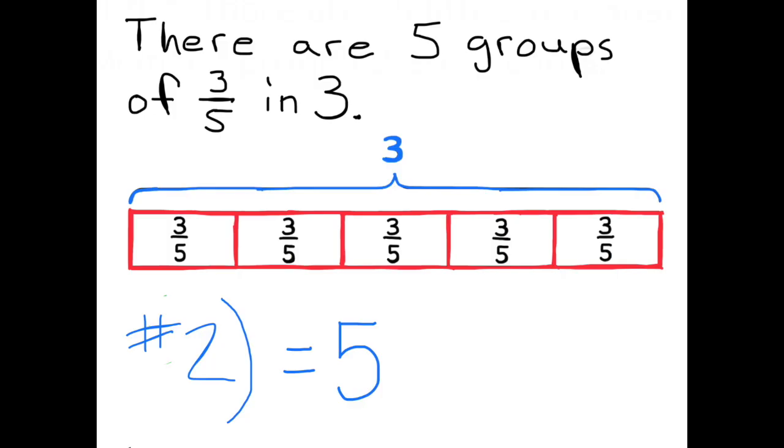Number 2. Describe how to draw a tape diagram to represent and answer 3 divided by 3/5 equals what number for a friend who was absent. In this tape diagram, I placed groups of 3/5 one after another until I had a total of 15/5, because 15/5 is equal to 3. There are 5 groups of 3/5 in 3, so the answer is 5.